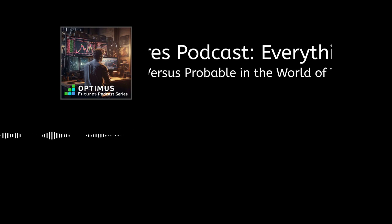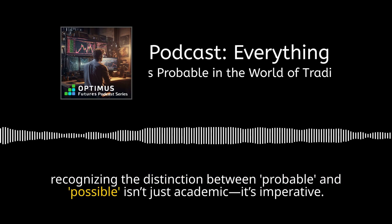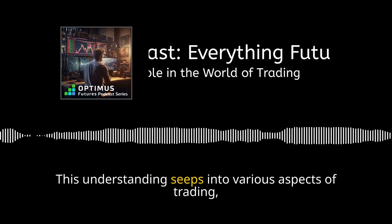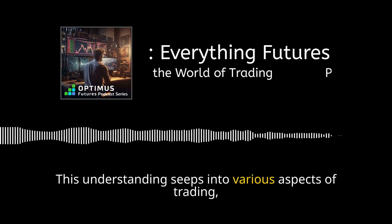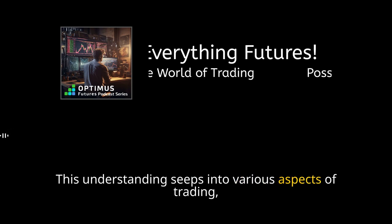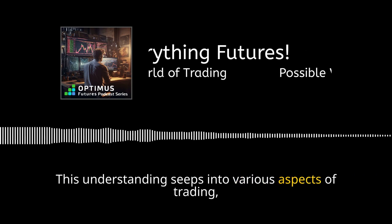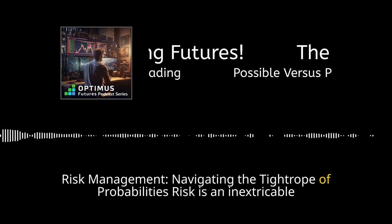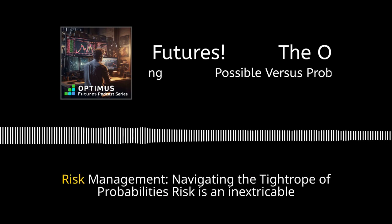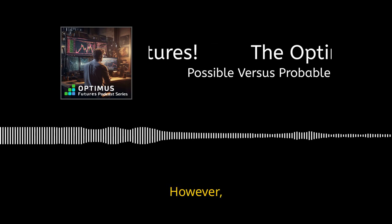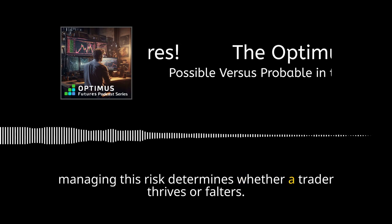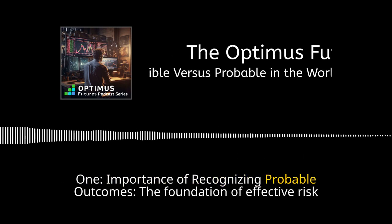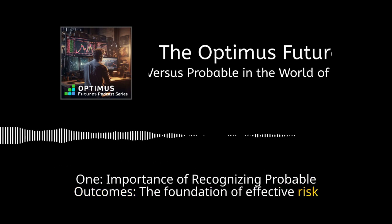Within the trading arena, especially when dealing with asset classes like futures, recognizing the distinction between probable and possible isn't just academic — it's imperative. This understanding seeps into various aspects of trading, shaping strategies and influencing decisions. Risk management is one such area: navigating the tightrope of probabilities. The foundation of effective risk management lies in accurately gauging the most probable outcomes.